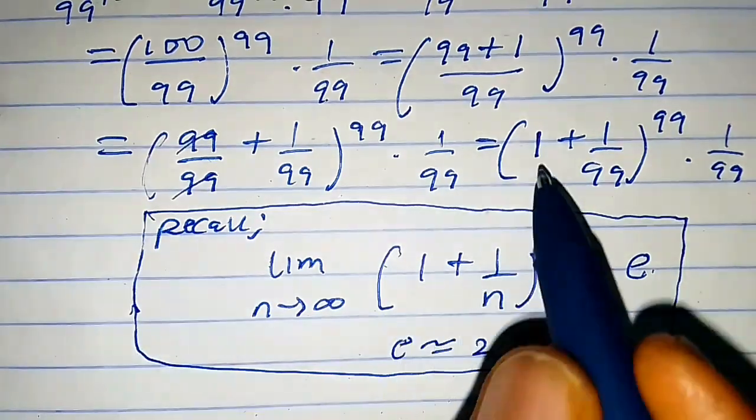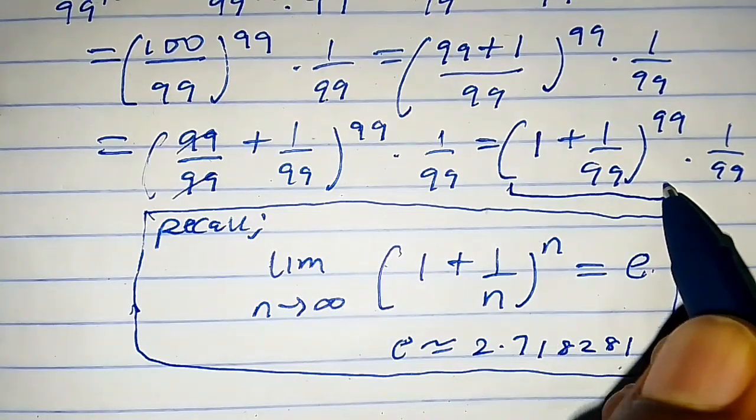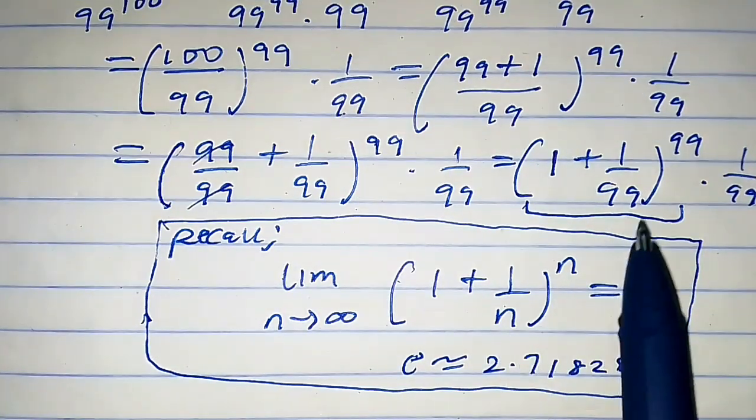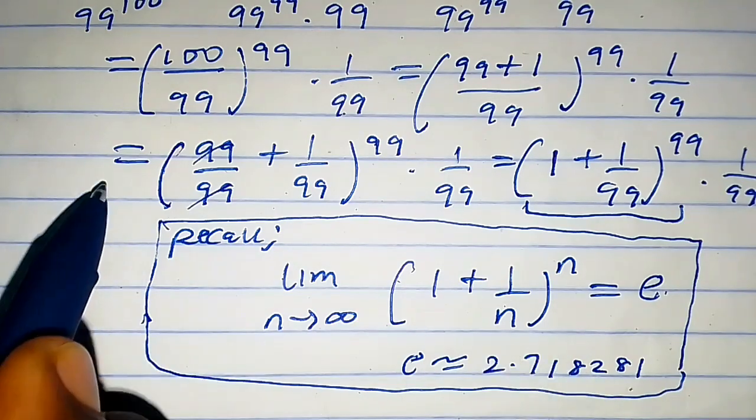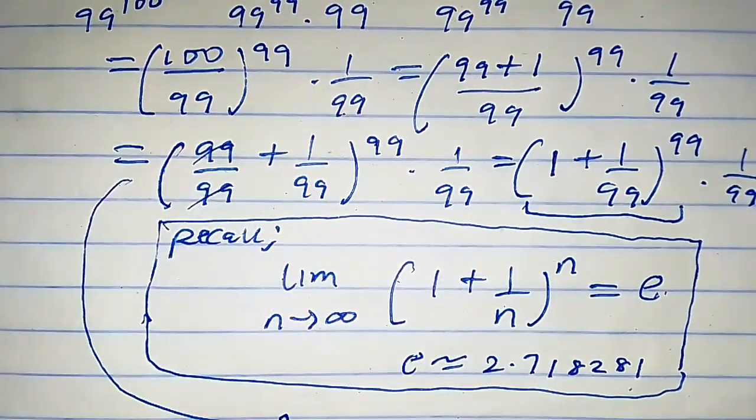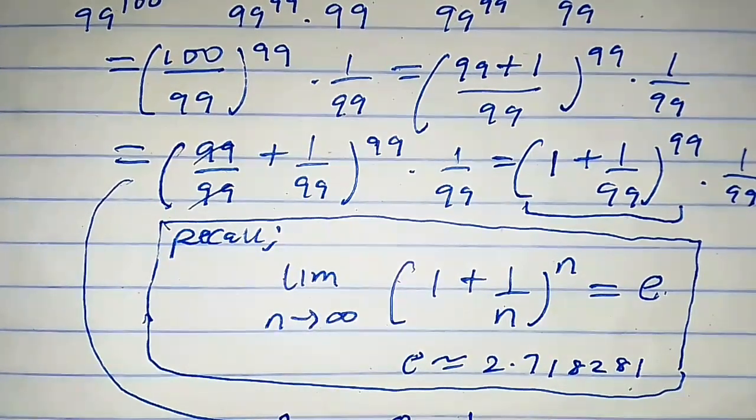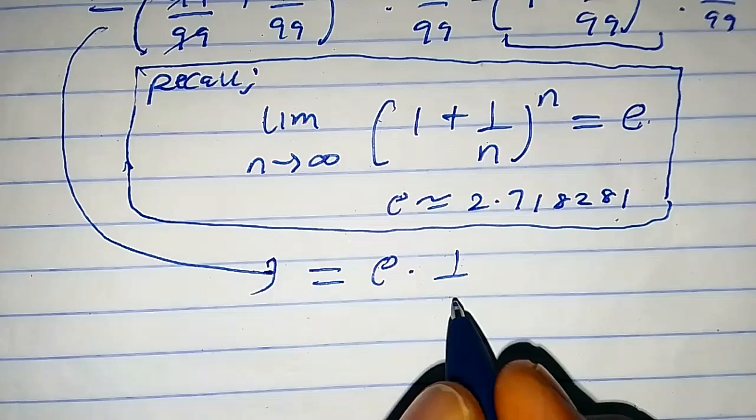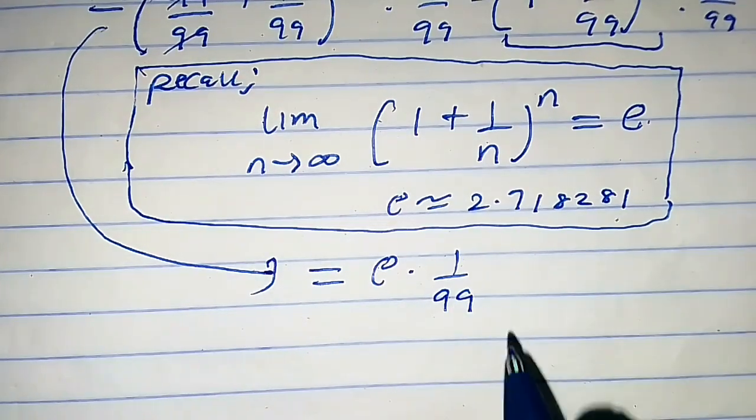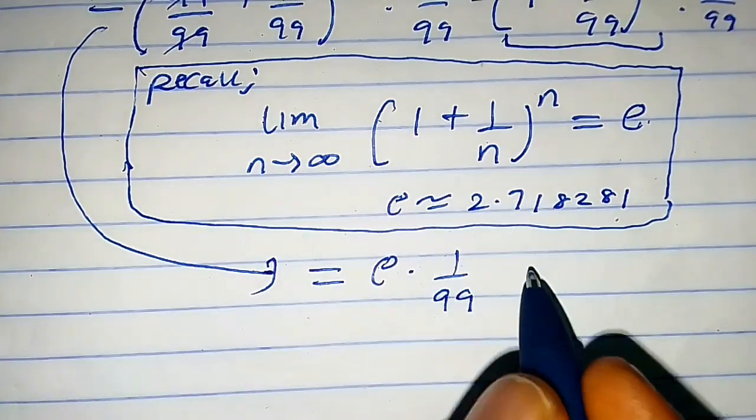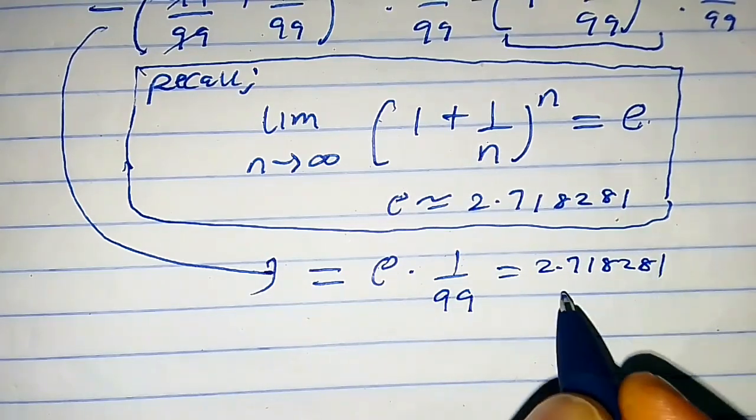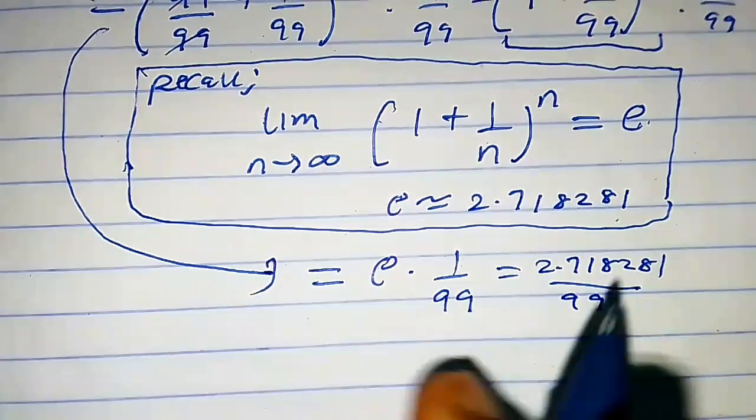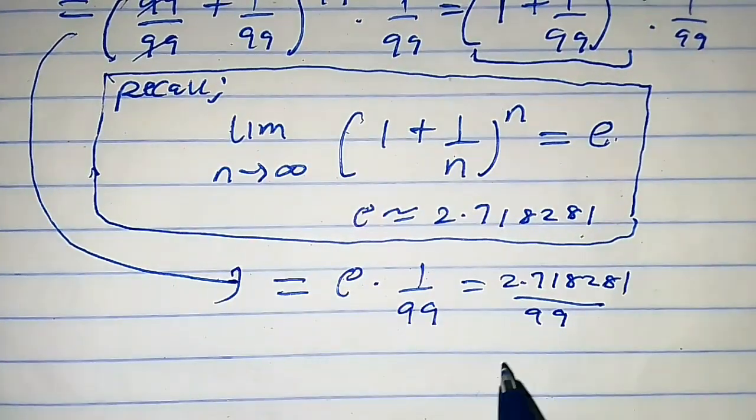By comparison, you observe that n is 99 and the exponent is n. So this whole expression equals e × (1/99). We already know the Euler number is 2.718281. When you plug this in your calculator, you obtain 2.718281/99.